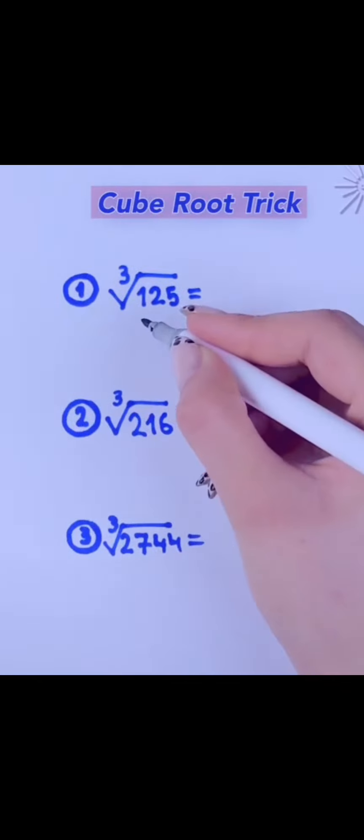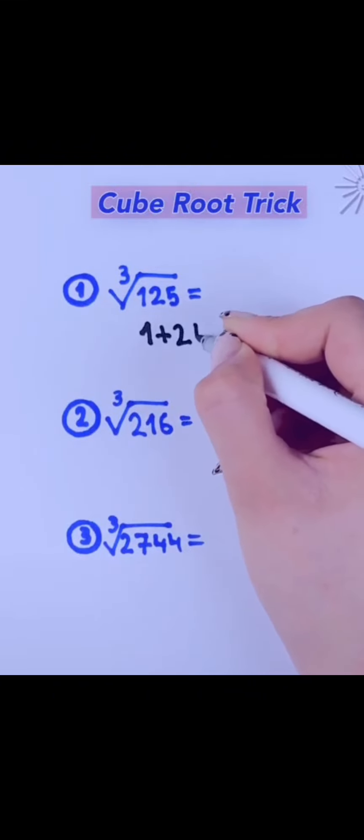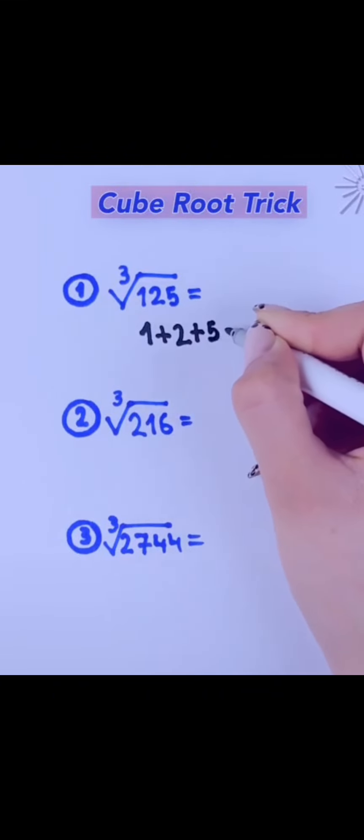Now, let's move on to cube root tricks. First, we have 1 plus 2 plus 5, which equals 8. Subtract 3, and you get 5.